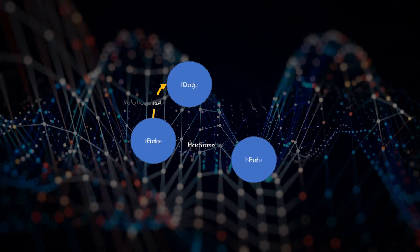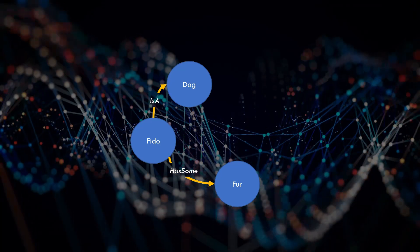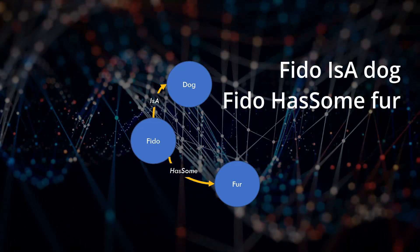Here is a graph with three nodes connected by two relationships representing the knowledge that Fido is a dog and Fido has fur.